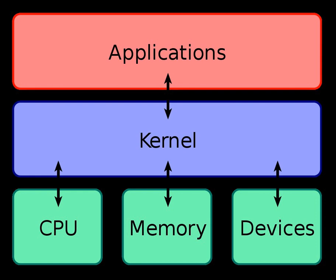The kernel's interface is a low-level abstraction layer. When a process makes requests of the kernel, it is called a system call. Kernel designs differ in how they manage these system calls and resources. A monolithic kernel runs all the operating system instructions in the same address space for speed. A microkernel runs most processes in user space for modularity.